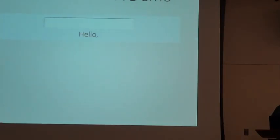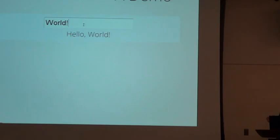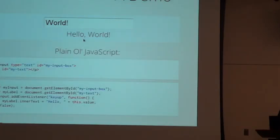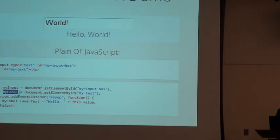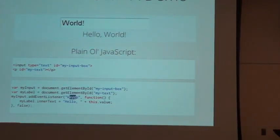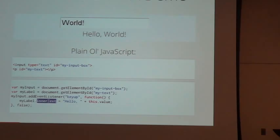To demo that, here's a little web application where you can type and see the label update as you type. This is not a complex application — we just want the value from an input to show up on the HTML page. In plain old JavaScript, we have an input box and a paragraph tag, then we scan the document for the input box and the label. We attach an event listener for the key-up event, and in the callback we take the value of the text box and set it into the label's text.